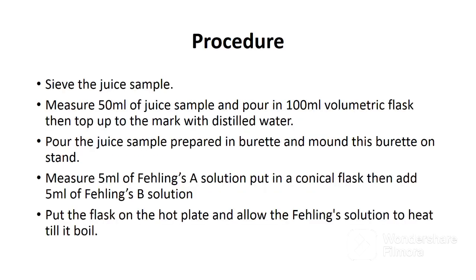Below is the procedure for analyzing reducing sugars in juice samples. Remember, this procedure is the same for all juice samples. I'll use one example — first expressed juice. The first step is to cool the juice, then sieve to remove tiny particles. Remember, if you don't remove them, they can block your burette during the titration. After sieving, measure 50 ml of juice sample and pour into a 100 ml volumetric flask.